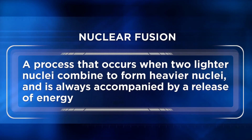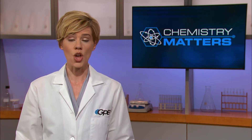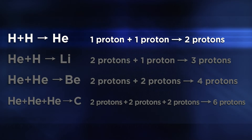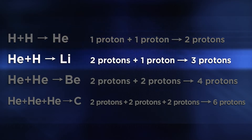Nuclear fusion is a process that occurs when two lighter nuclei combine to form heavier nuclei, and is always accompanied by a release of energy. Because the larger atoms are often more stable and less energetic, tremendous amounts of energy are released in this process. The energy from fusion is probably the most important to our lives — fusion produces the energy that the sun releases, so it's the energy that sustains life as we know it. Every element larger than hydrogen on the periodic table was formed from fusion inside of stars. Within a star, hydrogen nuclei combine with other hydrogen nuclei to form helium, then combine with helium nuclei to get lithium.